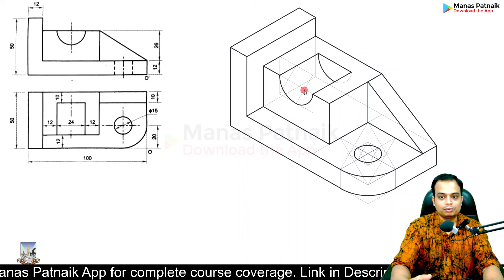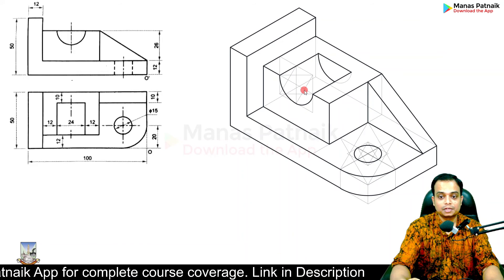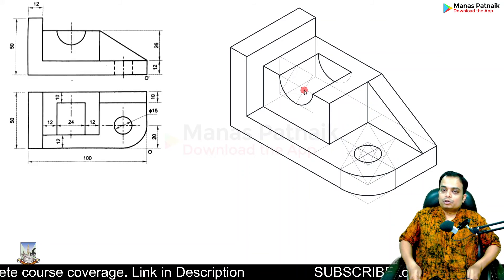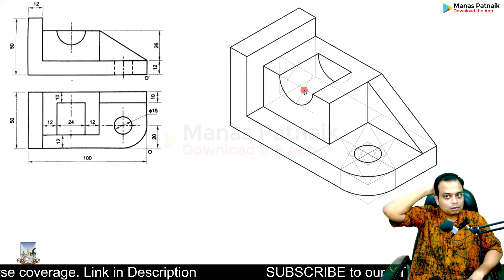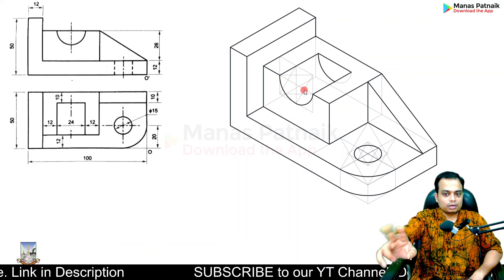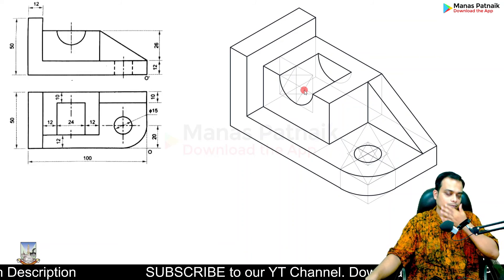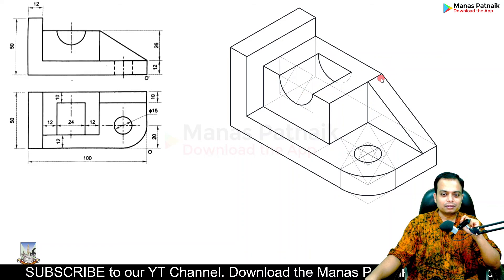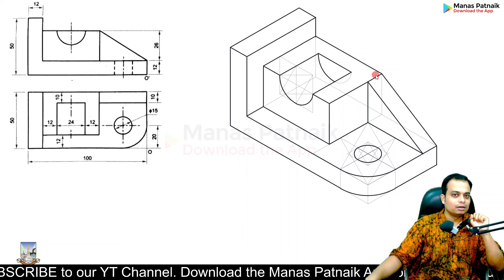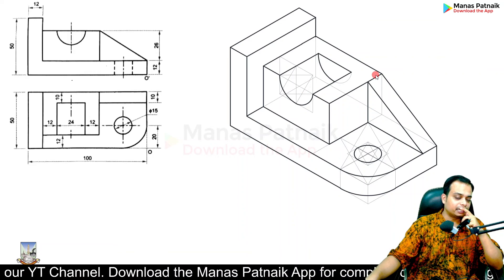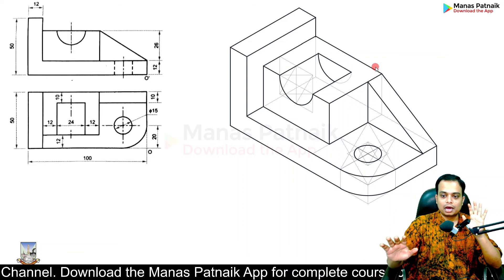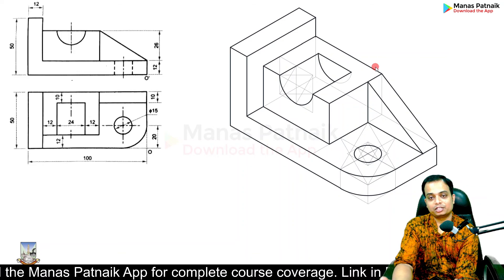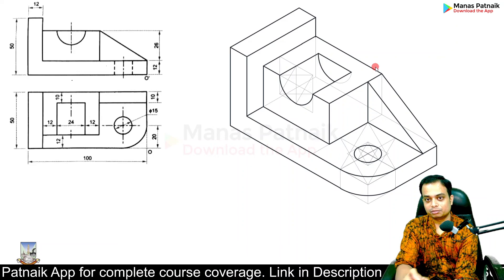So that's the isometric view, and it was a challenging problem. There was a similar problem I had done in my previous question paper series on Spoon University — the dimensions were different and the profile was also slightly different. I hope this problem has helped you understand the idea of creating an isometric drawing. If you've got any doubts, write them down in the comment section below.